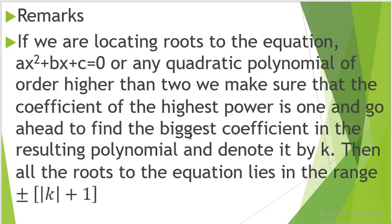Remarks. If we are locating roots to the equation ax squared plus bx plus c equal to 0, or a polynomial of order higher than 2, we make sure the coefficient of the highest power is 1, then find the biggest coefficient in the resulting polynomial and denote it by k. Then all the roots to the equation lie in the range plus or minus the magnitude of k plus 1. A quadratic equation has at least 2 roots; a degree-3 polynomial has 3 roots; a degree-4 polynomial has 4 roots.